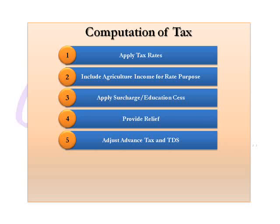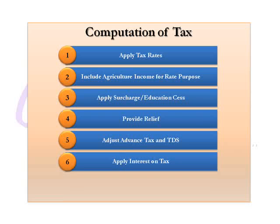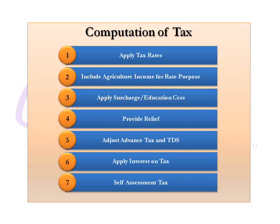Certain provisions of the Income Tax Act require the taxpayer to deposit tax during the year itself — this is called advance tax. Certain other provisions require the person making a payment to the taxpayer to deduct some amount of tax from the payment — this is called Tax Deducted at Source, or TDS. The taxpayer gets credit for these amounts, meaning his income tax liability is reduced by them. So in this step, we deduct TDS and advance tax from the net tax liability. Next, we apply interest on tax. The last step is to deposit the balance tax amount before filing the return — this is called self-assessment tax. After depositing this, the return of income can be filed.